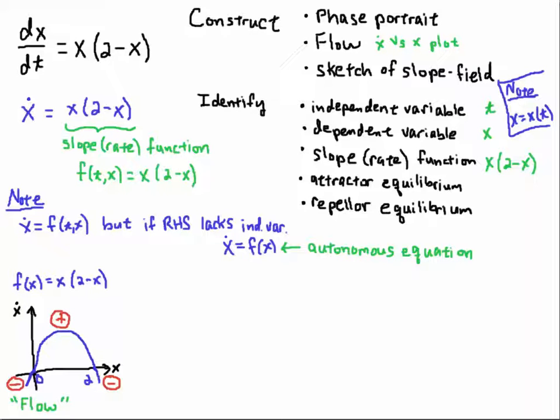I've noticed that, or I'll point out that x dot is negative when you're left of 0. It's positive between 0 and 2. And it's negative when you're above 2. So that's going to become important because we want to identify where the solution might be increasing and decreasing. And we want to be able to classify these points 0 and 2, which are the zeros of the slope function. Those are called equilibrium solutions.